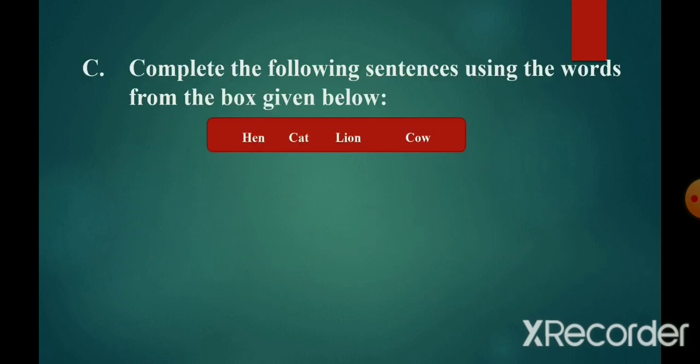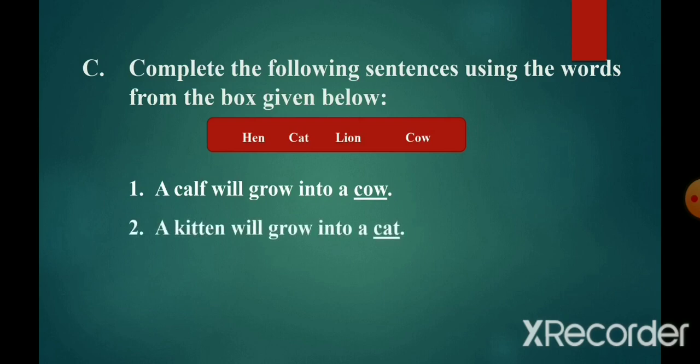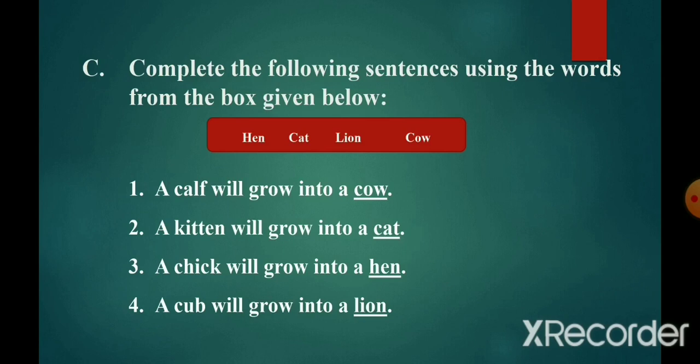Section C: Complete the following sentences using the words from the box given below. In the box there are four words: hen, cat, lion, and cow. Number one: A calf will grow into a cow. Number two: A kitten will grow into a cat. Number three: A chick will grow into a hen. Number four: A cub will grow into a lion.